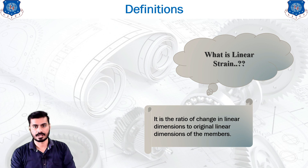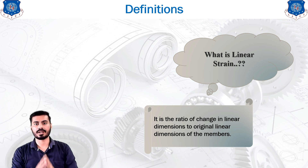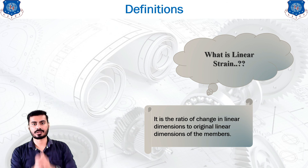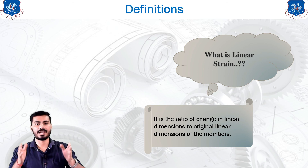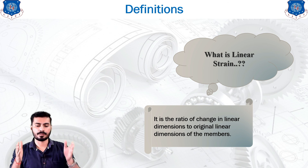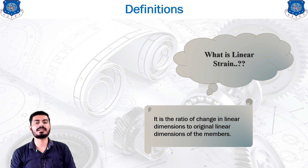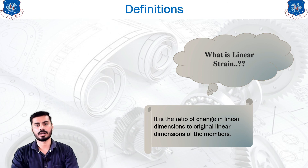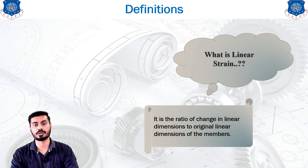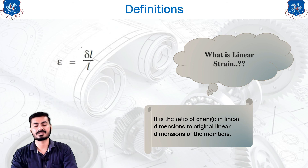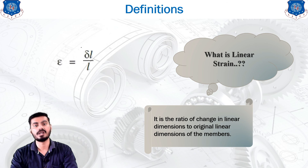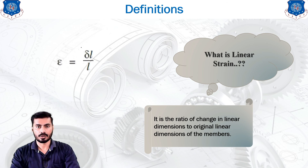Whatever dimensions are along the longitudinal axis are known as linear dimensions. For example, if you consider a rectangular bar and apply a pull force on it, the length will increase. That increase in length constitutes the linear strain, formalized by the simple equation: linear strain = δl / l.